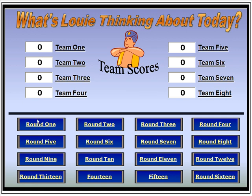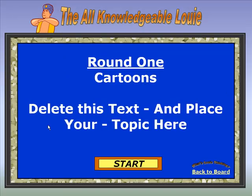As we look at our first screen here, we can see the different rounds. Before the game is played, the teacher or trainer has gone in and typed in the words or phrases for each one of these rounds. For example, I'm going to click on round one, where I've already typed in the word 'cartoons.'